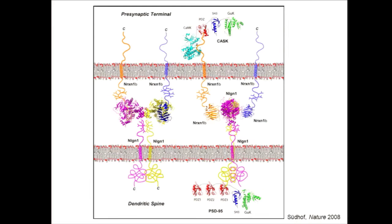I want to close with one last story addressing whether we can actually use these reprogramming systems to model a brain disease. It is difficult to claim that any ES- or iPS-derived neurons really have anything to do with neurons in our brains, which were generated through a nine-month period of embryonic development and many years of postnatal maturation in a three-dimensional context. In humans this experiment is not possible, but in mice it is.